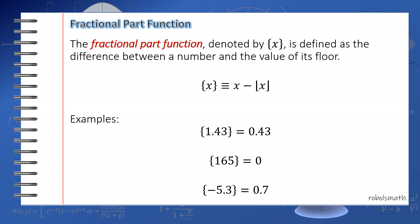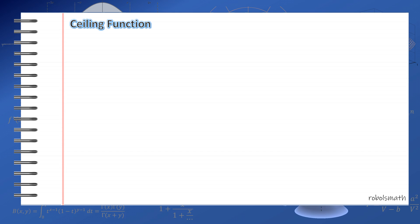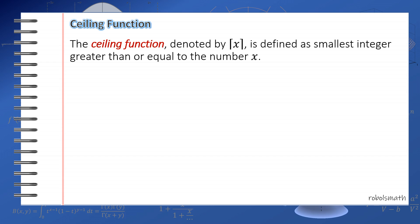We'll discuss some other properties of this later on. For the ceiling function, it's like the floor function except that you are getting the smallest integer greater than or equal to the number x. If the floor function is round down, the ceiling function is round up. So for example, the ceiling of 1.43 is 2, because you're rounding up, and the closest one is 2. The ceiling of an integer is always the same integer, so the ceiling of 165 is always 165. The ceiling of pi is 4, because pi is 3.14 something, so you round that up, so it becomes 4.